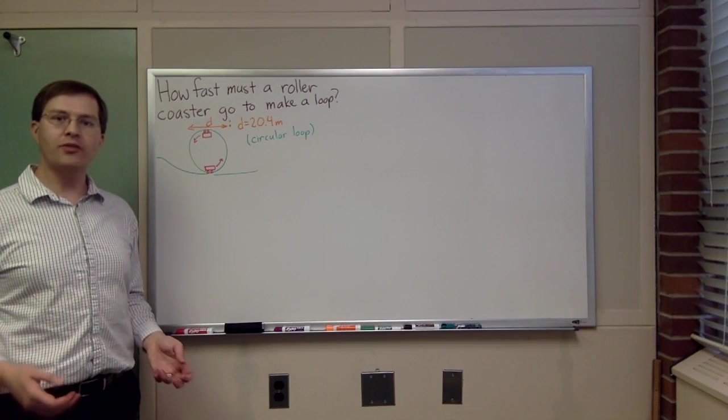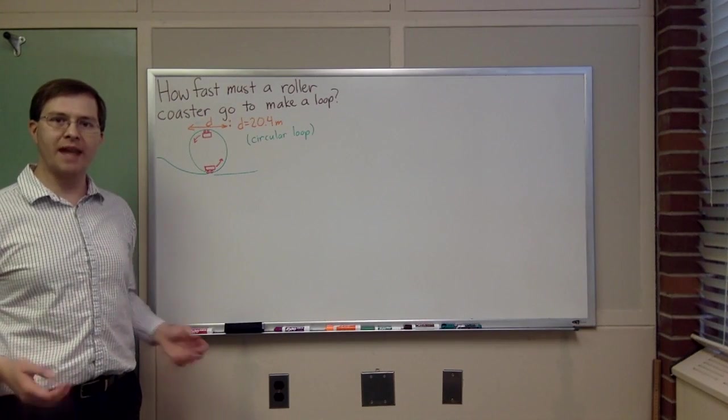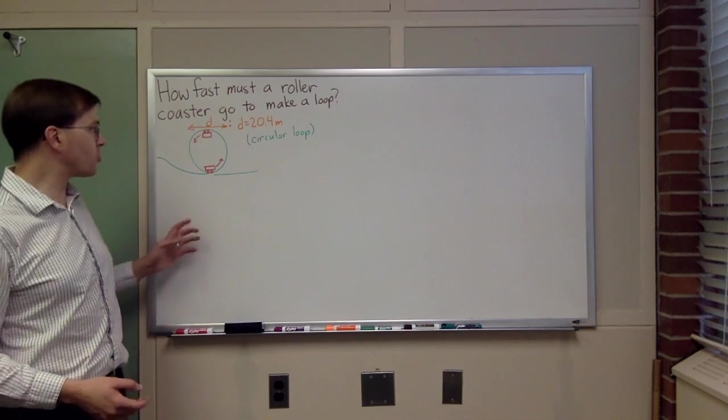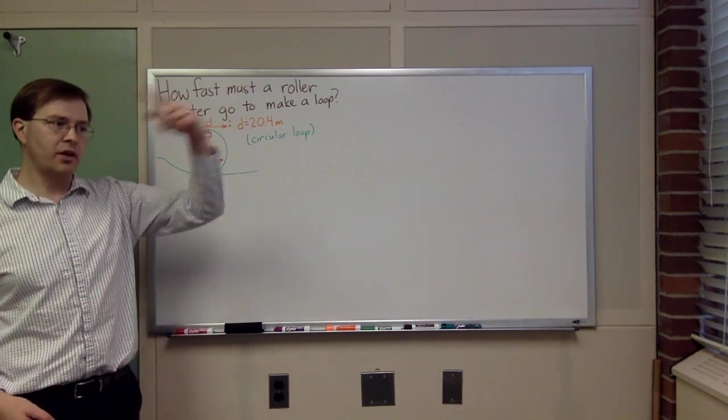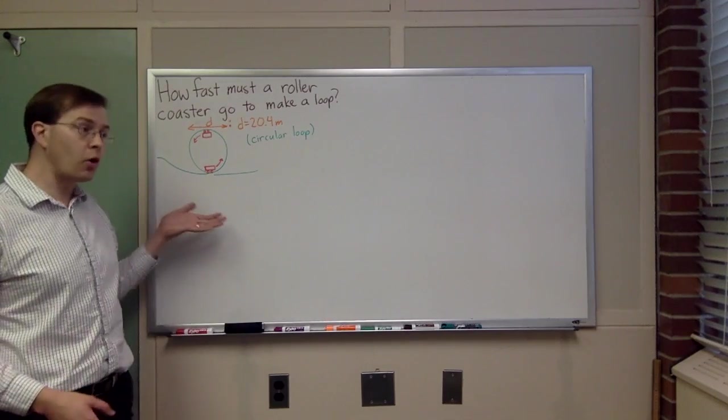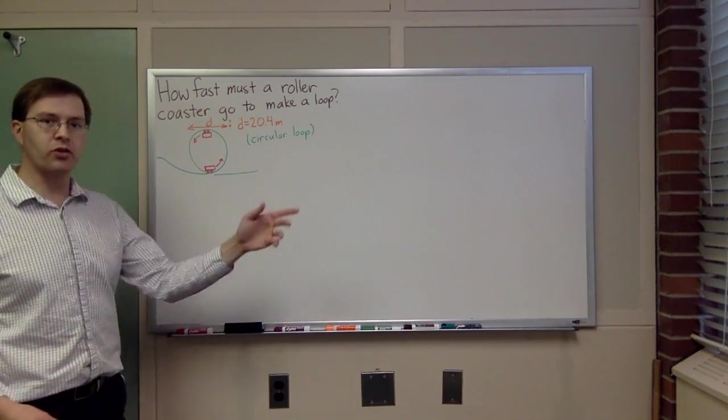I want to work through an example of using forces and free body diagrams to analyze motion in a circle that is vertically oriented, a circle in a vertical plane, going around a loop like this, in particular a roller coaster going around that vertical loop.